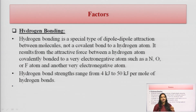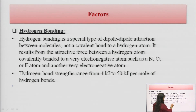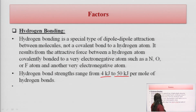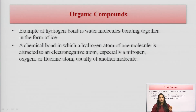Hydrogen bonding: where a carbon atom attaches with a hydrogen atom. Hydrogen bond strength ranges from 4 kJ to 50 kJ per mole. An example of hydrogen bonding is water molecules bonding together in the form of ice.